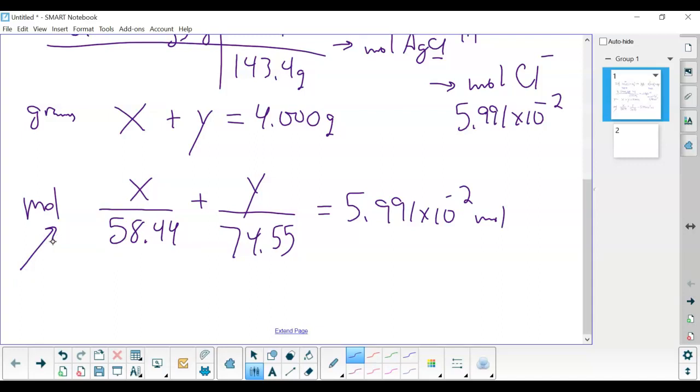By multiplying all of these by 74.55, that's going to cancel these out. That's going to change this to 1.276x + y, which gives us, when you multiply that, you get 4.466. Let's transfer these to another slide.